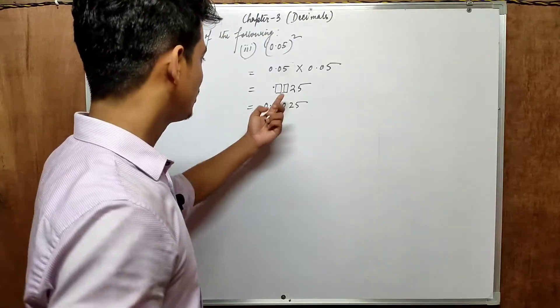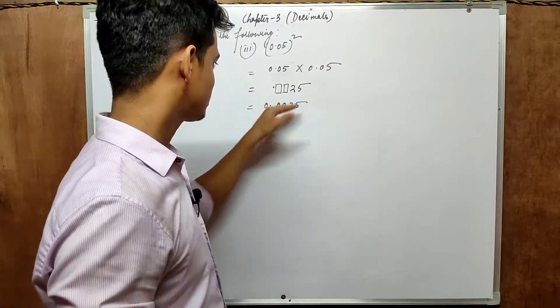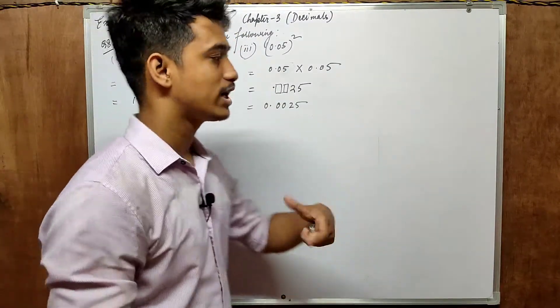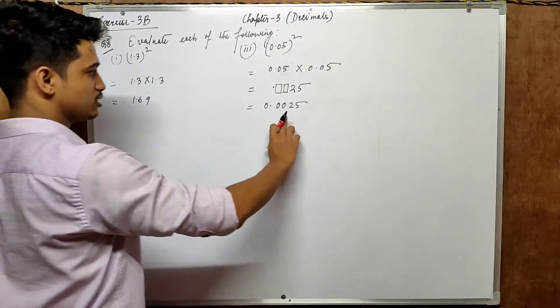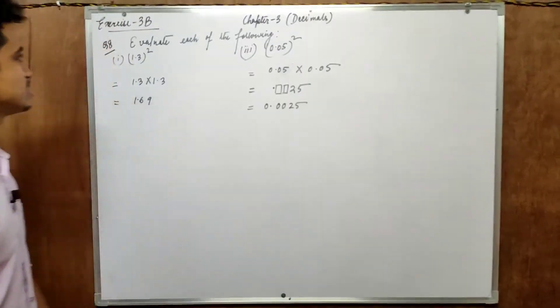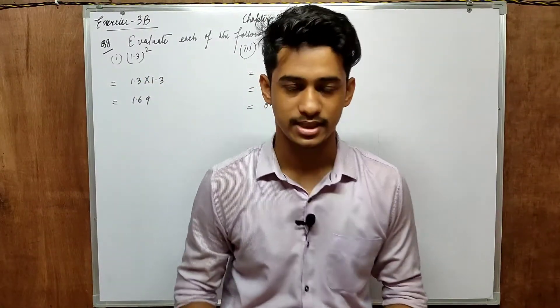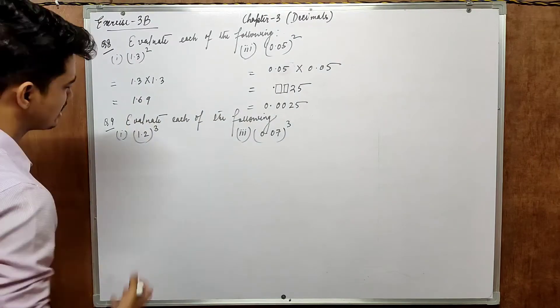So in the examination, you don't need to write this one. There is no need to mention this type of brackets. I just portrayed this to make you understand what exactly it feels like. So the answer is 0.0025. That's it for question number 8. So let's move around to question number 9.